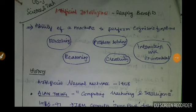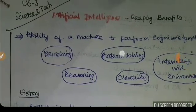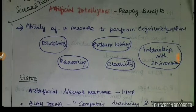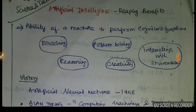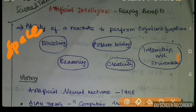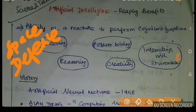The heading for the first topic is 'Artificial Intelligence: Reaping Benefits.' This is a GS3 Science and Technology topic. GS3 covers Science and Technology, AI, Space, Defense, and related topics including trending subjects like IoT — Internet of Things.